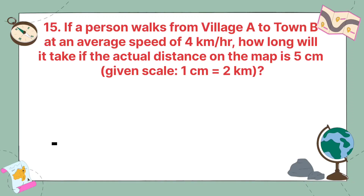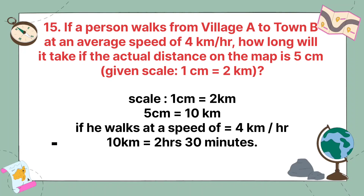If a person walks from village A to town B at an average speed of 4 km per hour, how long will it take if the actual distance on the map is 5 cm? The scale is 1 cm equal to 2 km, so 5 cm equals 10 km. Walking at 4 km per hour, for 10 km it would take 2 hours 30 minutes.